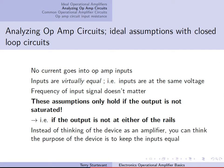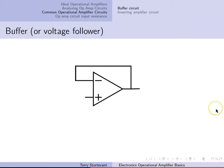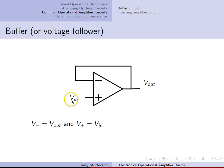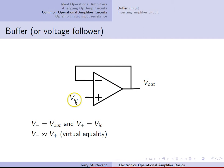Instead of thinking of the device as an amplifier, you can think of its purpose as to keep the inputs equal, which is the case with closed-loop negative feedback circuits. The most simple circuit is a buffer or voltage follower. You have an input voltage and an output voltage, and the output is tied directly into the inverting input. Since the two inputs are equal, the voltage at the non-inverting input and the inverting input are equal. Since the voltage at the inverting input is tied to the output, the output voltage equals the input voltage.